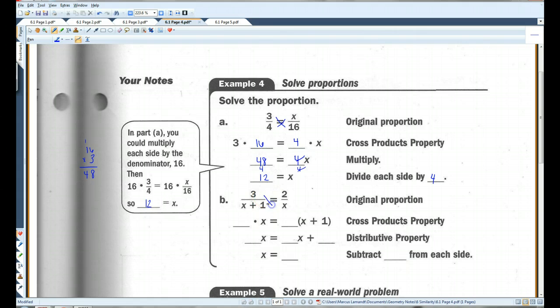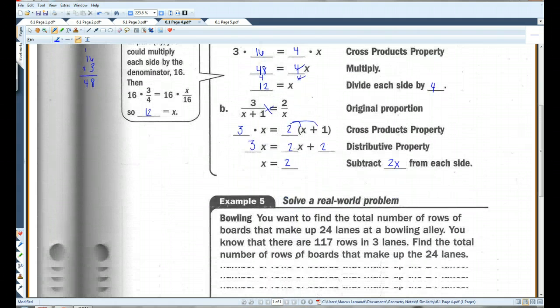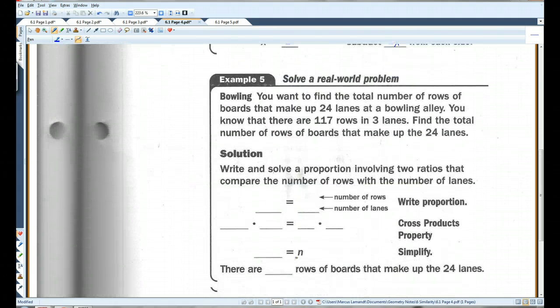In part A, you could multiply each side of the denominator by 16. x would still equal 12 because 16 times 3 is 48 divided by 4, which is still 12. Alright, let's try this one. I have 3 times x equals 2 times x plus 1. I need to distribute the 2. So I have 3x equals 2x plus 2. I'm going to subtract 2x from each side. x equals 2.